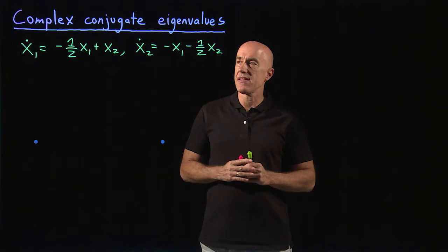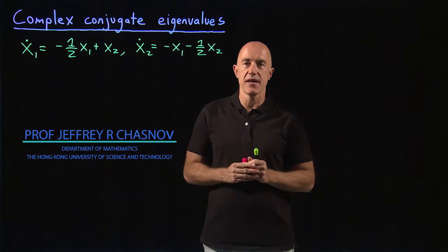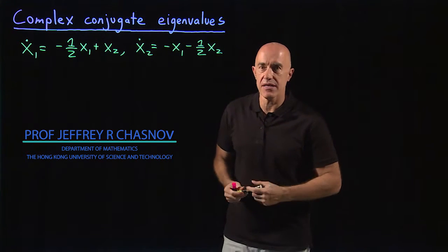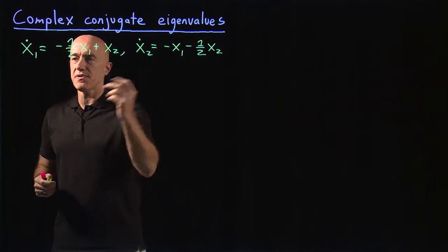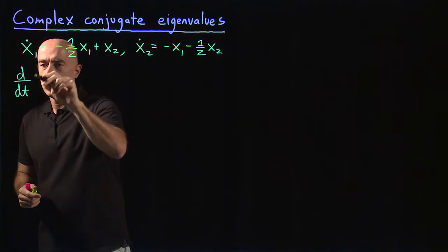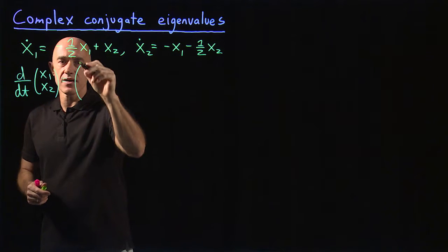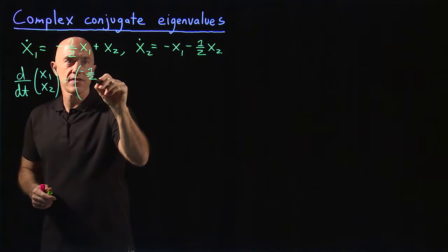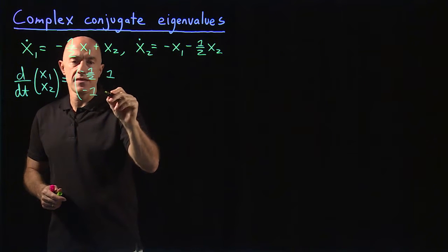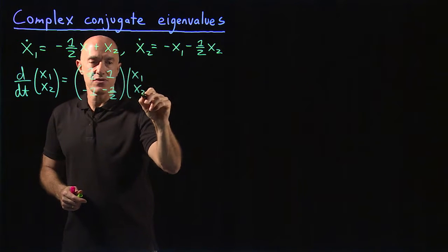Let's try the second case when you have complex conjugate eigenvalues. This is our system of linear first order equations. We should put them in matrix form. So we have d/dt of [x1, x2] equals the matrix [−1/2, 1; −1, −1/2] times [x1, x2].